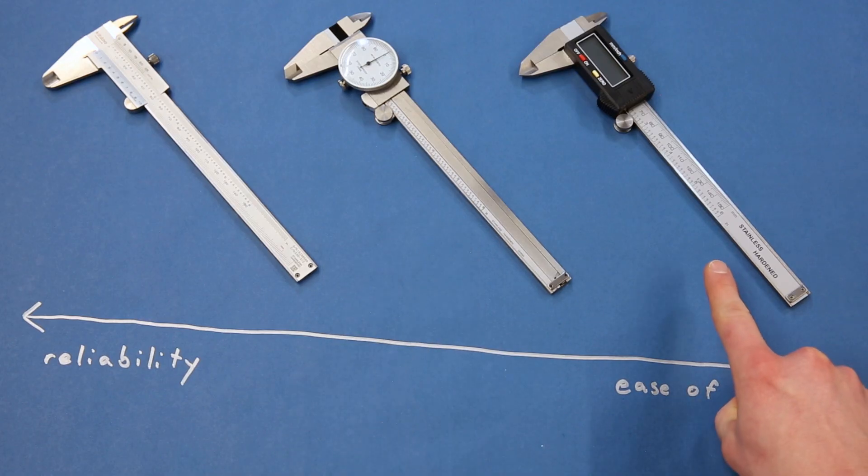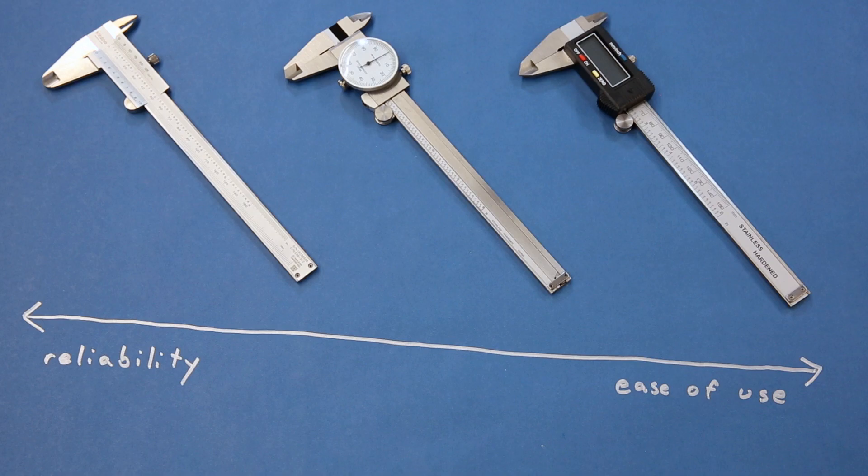Digital calipers use a series of conductive pads in the main scale, and another set of pads in the slide to measure capacitance as the slide moves. The distance the slide moves is shown on the LCD. This makes digital calipers very easy to use and read, but the battery on mine seems to die whenever I need it the most.